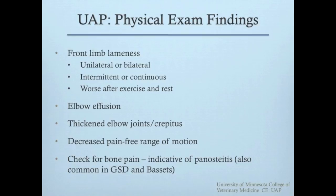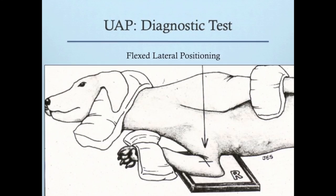Since pan-osteitis shares a high frequency of occurrence in similar breeds of dogs, it should be considered as a differential diagnosis. Thus, during your orthopedic exam, it is important to remember to check for bone pain above and below the joint before checking for joint pain. Plain radiographs are adequate to confirm the presence of a UAP, but a flexed lateral view shows the anconeal process with the least amount of superimposition of bone.